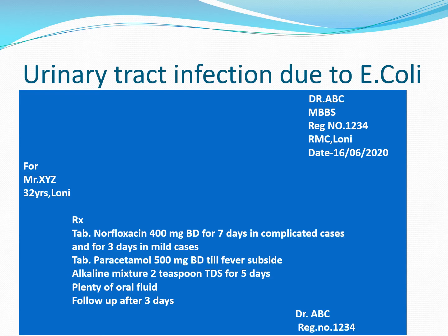The question arises: why is Norfloxacin the drug of choice? Because Norfloxacin gets more concentrated in urine than other drugs, and it has excellent activity against gram-negative microorganisms like E. coli, Klebsiella, Salmonella, Shigella, and Proteus. That is why Norfloxacin is the drug of choice in UTI infection. It is administered at a dose of 400 mg twice daily for 7 days. Norfloxacin belongs to the fluoroquinolone class of antibiotics.